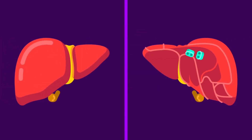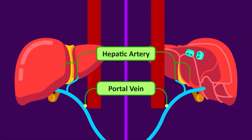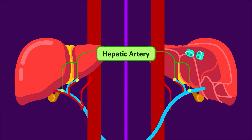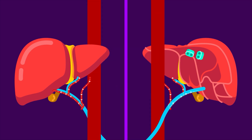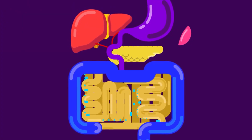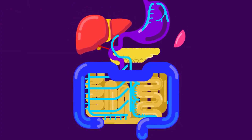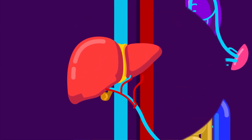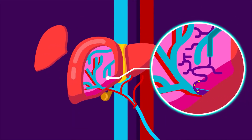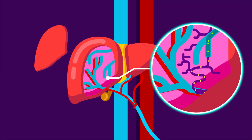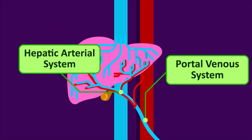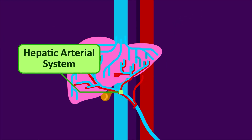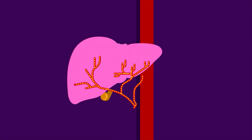The blood supply of the liver involves two major vessels: the portal vein and the hepatic artery. Hepatic tissue receives oxygenated blood via the hepatic artery, whilst the portal vein collects deoxygenated blood from the gastrointestinal tract, spleen, and pancreas, filters it in the liver, eliminates toxins, and processes the nutrients absorbed from the gastrointestinal tract. Let's look at both systems one by one.